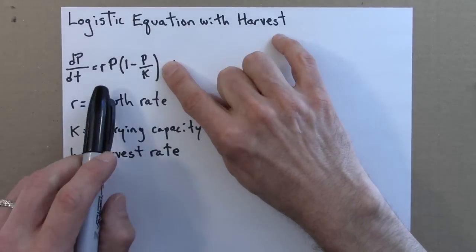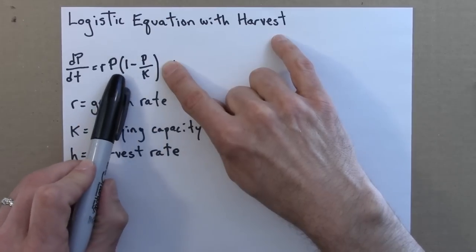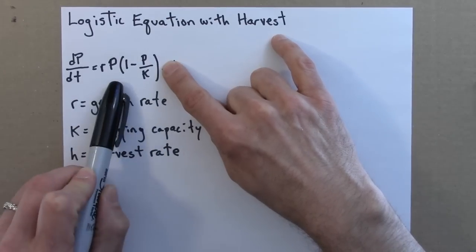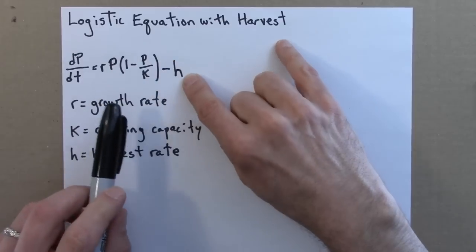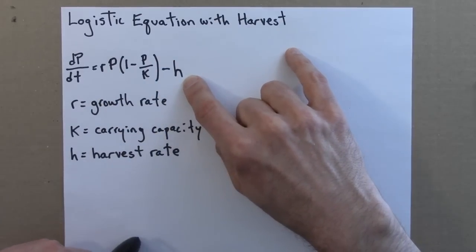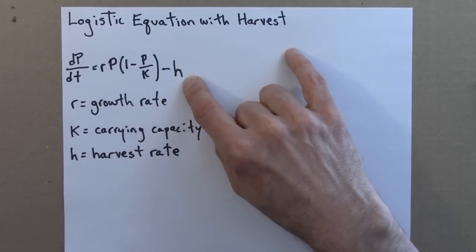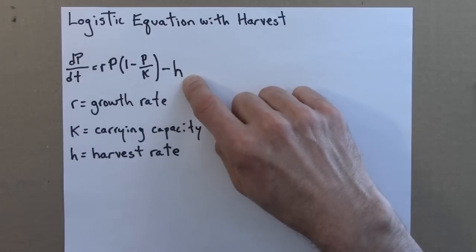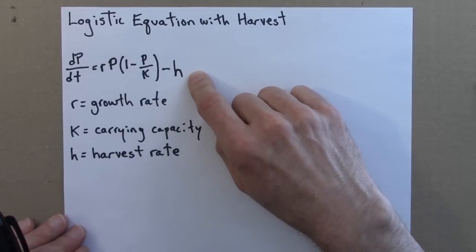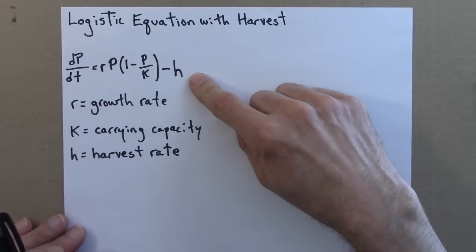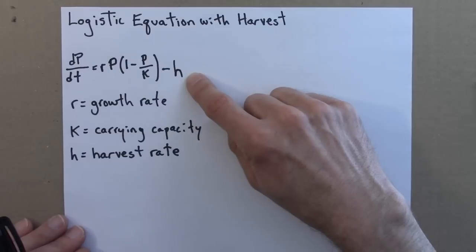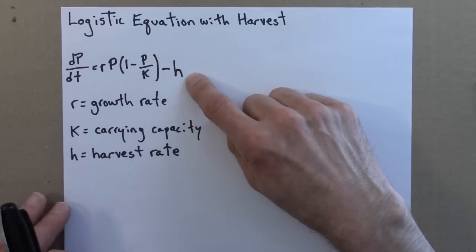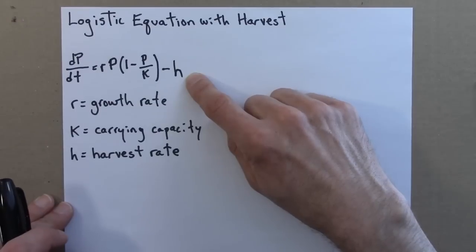Notice that these terms here are density dependent. The growth rate depends on the numbers of fish that are present, p. The h term, how many we harvest or catch, does not depend on the number of fish that are present. That's maybe not an entirely accurate view of things, but maybe for some fish that are dumb or slow or easy to catch, you can catch them equally well independent of how many there are.